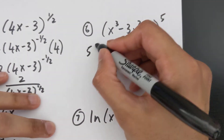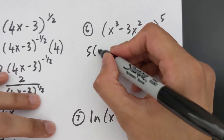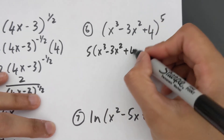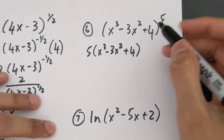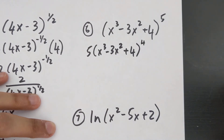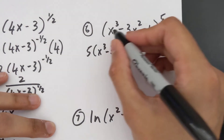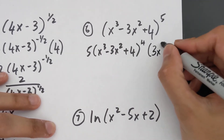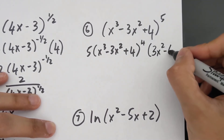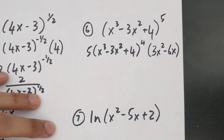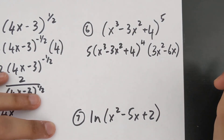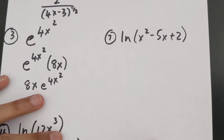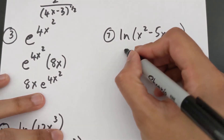For the next one, bring the 5 to the front, write the exact same thing in the bracket, subtract 1 from the exponent, then multiply by the derivative of the inside. The derivative of the inside is 3x² − 6x, and you can leave that as your final solution — no need to simplify further.